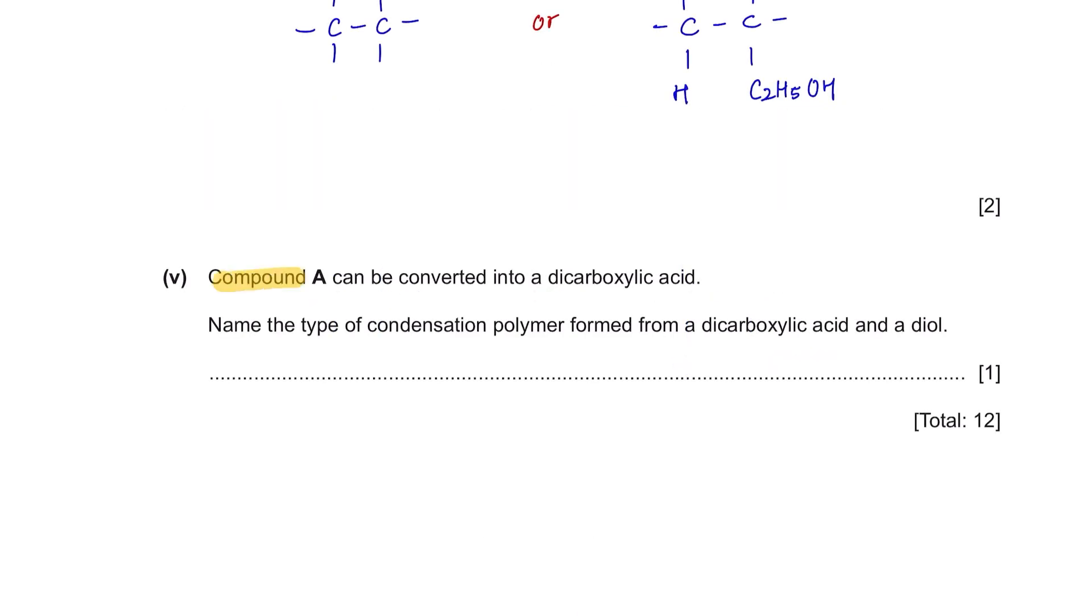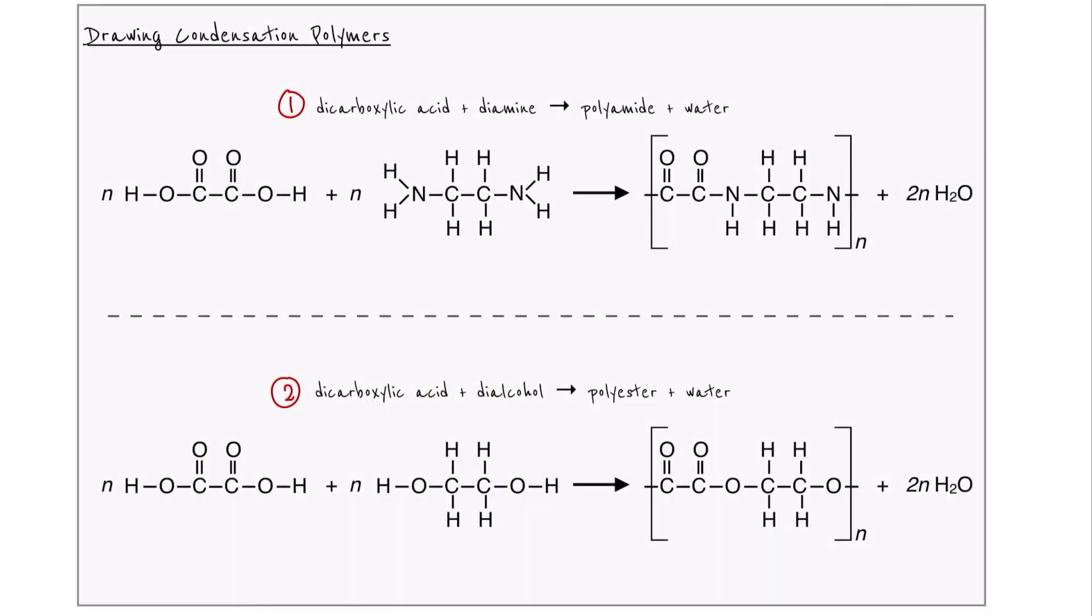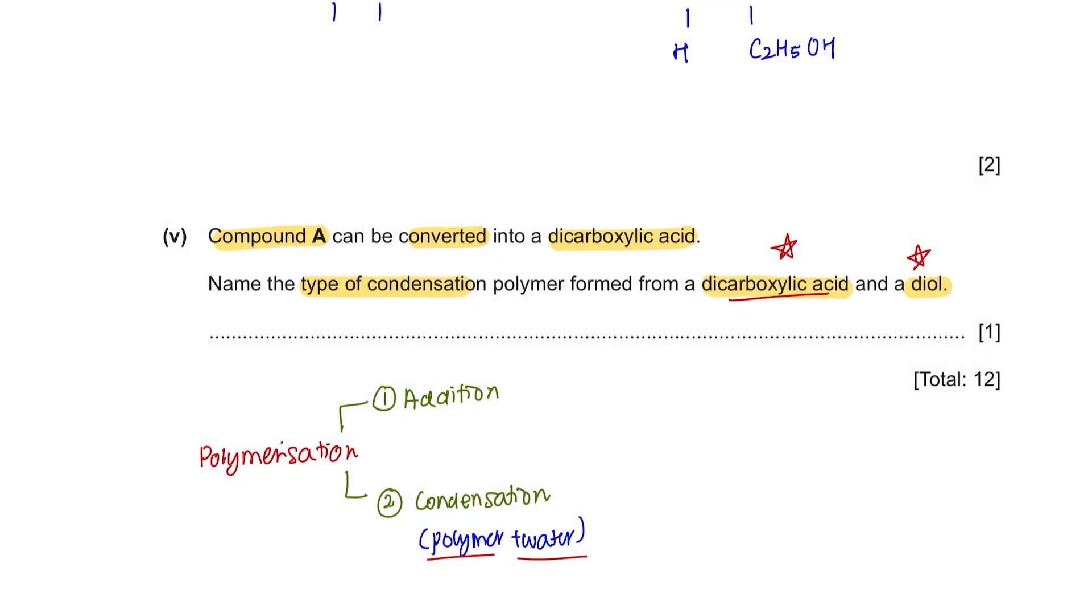Last question. Compound A can be converted into a dicarboxylic acid. Name the type of condensation polymer formed from a dicarboxylic acid and a diol. There are two types of polymerization: Addition polymerization and condensation polymerization. In condensation polymerization, two different functional groups will react together to form a polymer and water. One is from dicarboxylic acid with diamine giving you polyamide and the other one is dicarboxylic acid and dialcohol giving you polyester. So dicarboxylic acid and diol which is alcohol would give you polyester.